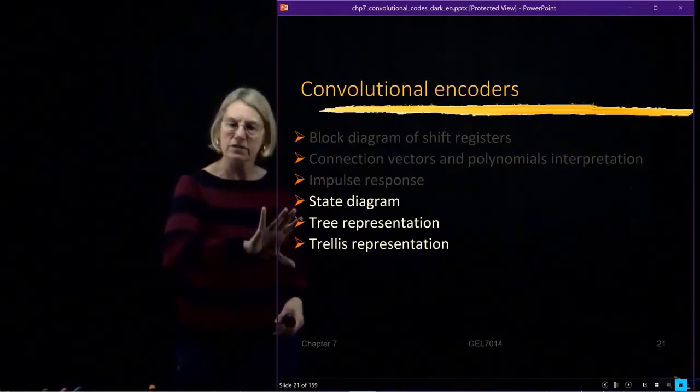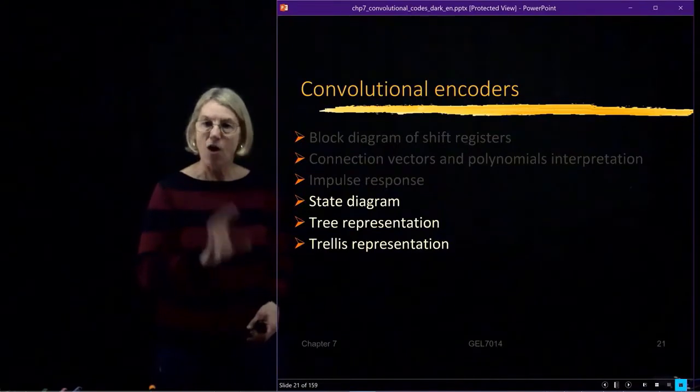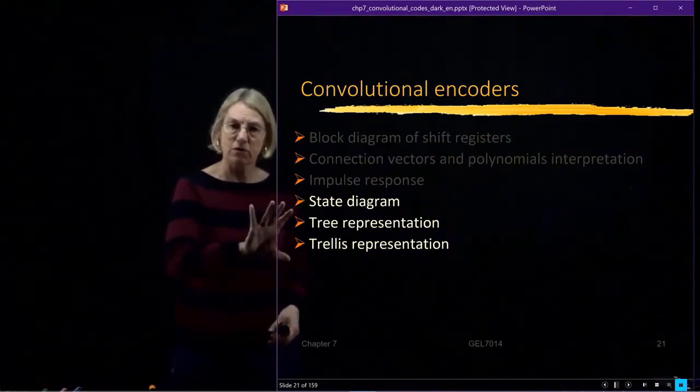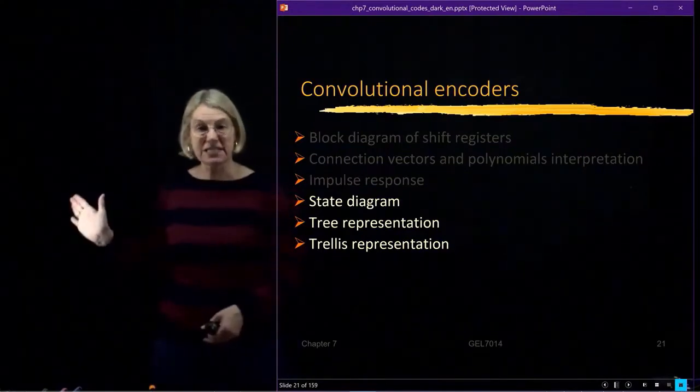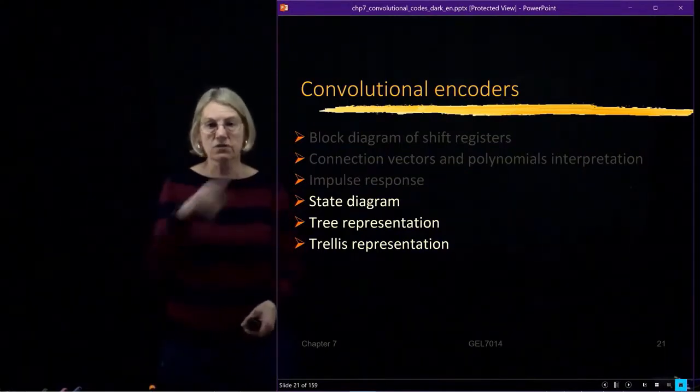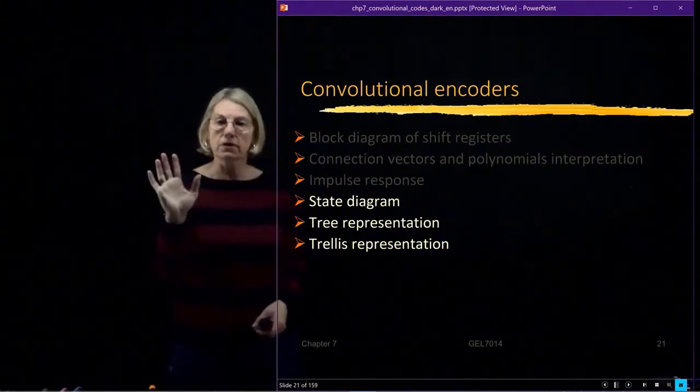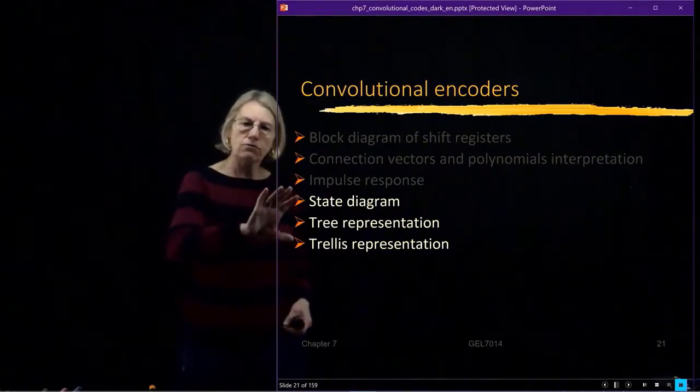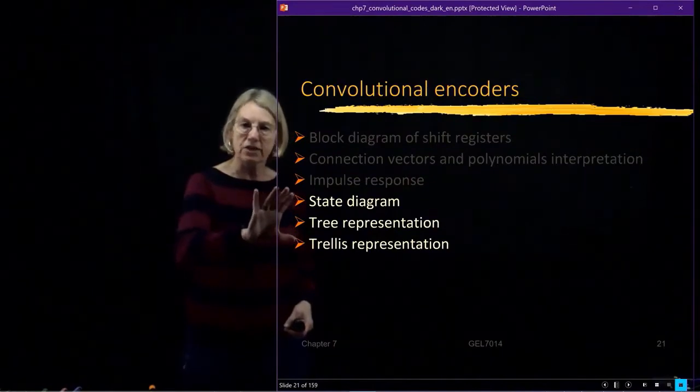And the last three are really important for understanding how our decoder works. So using this representation of the encoder leads us to the implementation of the decoder. So the implementation of an encoder is simple - it's the shift register, very simple, very cost effective. Now, for the decoder, things get much, much trickier.